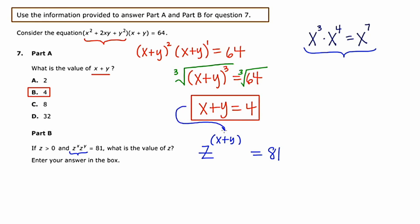So this turns into z to the power of 4 is equal to 81. And now what I can do is I can take the fourth root of both sides. And taking the fourth root of something raised to the fourth, that undoes itself. So I'm left with just z over here on the left. And technically, because I'm taking an even root, I'm left with plus or minus 3. The fourth root of 81 is 3.